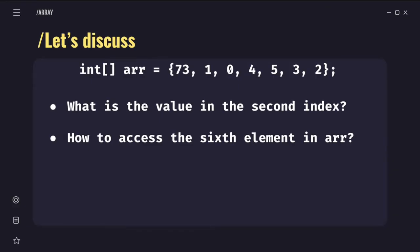Let's discuss. So let's say we have an example here: int in bracket arr equals to curly bracket 73, 1, 0, 4, 5, 3, 2. This example shows where we initialize values in our array. Array named arr - what values does it hold? So let's say the question asks: What is the value in the second index?